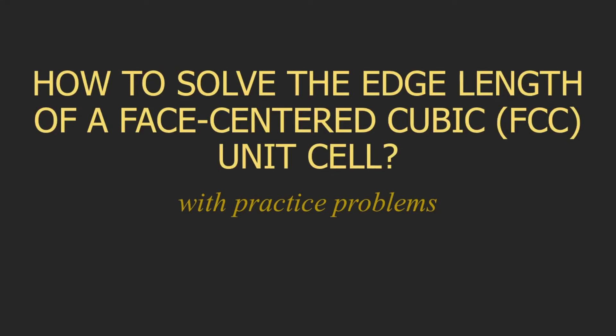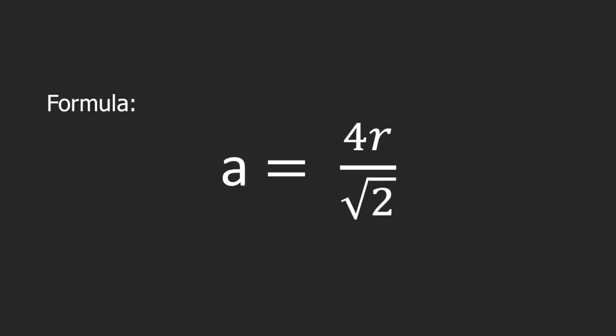Hi! In this tutorial, we will be solving the edge length of a face-centered cubic unit cell. To solve the edge length of an FCC unit cell, we will be using this simple formula: A is equal to 4R divided by square root of 2. A is the edge length, and R is the radius of the atom.